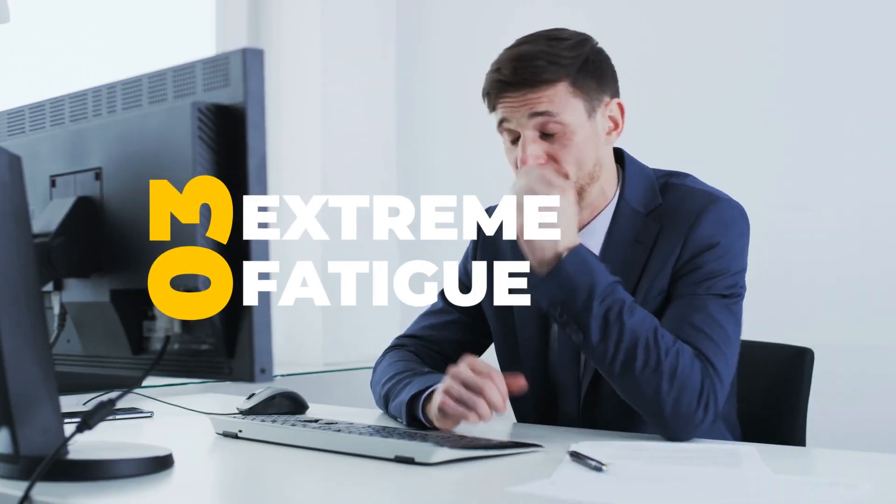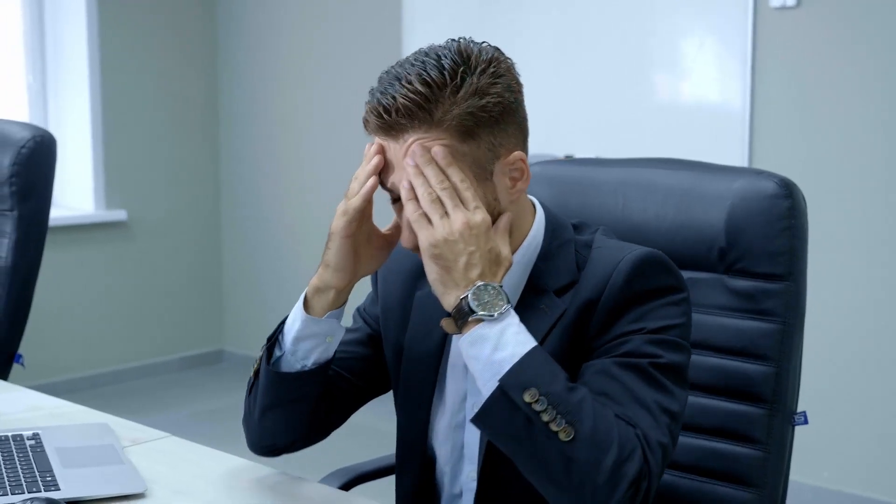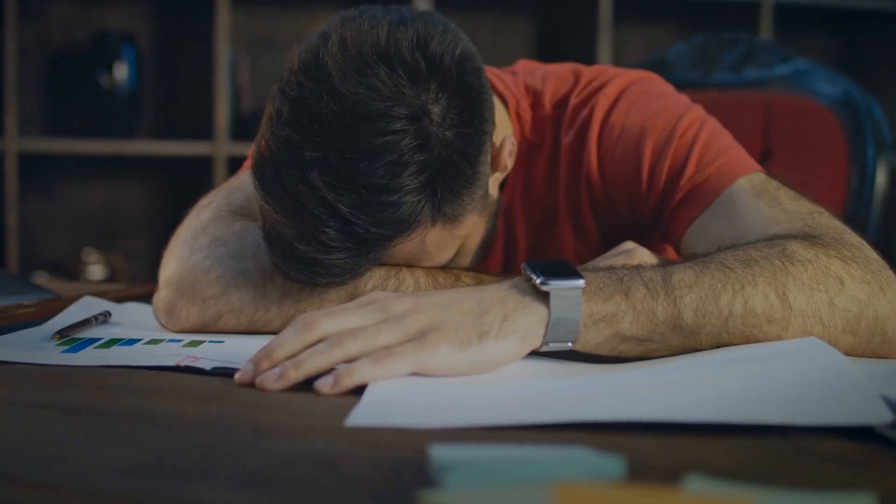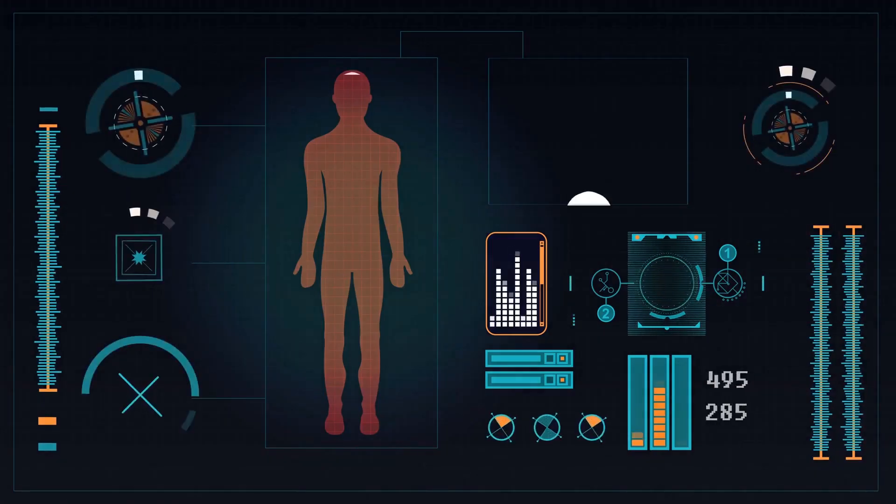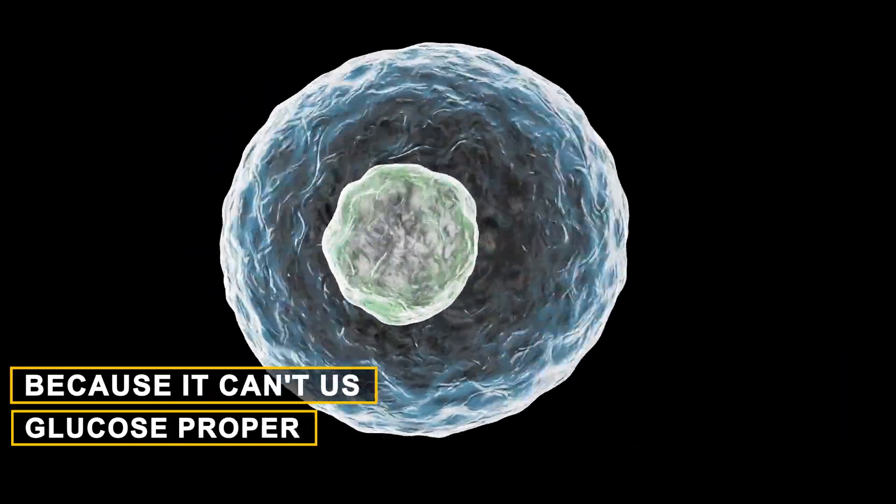Number 3. Extreme Fatigue. As DKA happens, you may feel very tired and weak, like your body has no energy. This extreme fatigue is your body telling you it's struggling to make energy because it can't use glucose properly.